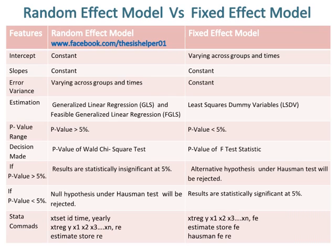The decision in the Random Effect Model is based on the p-value of the Wald chi-square test, whereas the decision in the Fixed Effect Model is based on the p-value of the F-test statistic. The p-value range in the Random Effect Model is p-value greater than 5%, whereas in the Fixed Effect Model it is p-value less than 5%. If the p-value is greater than 5%, results are statistically insignificant at 5% and the alternative hypothesis under the Hausman Test will be rejected. If the p-value is less than 5%, the null hypothesis under the Hausman Test will be rejected and results are statistically significant at 5%.